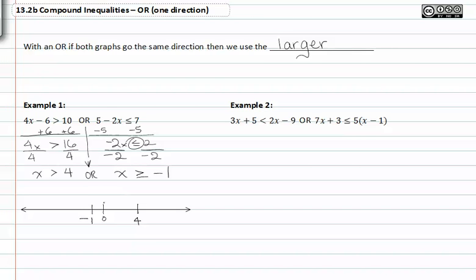If x is greater than or equal to -1, this is going to be a closed dot at -1, heading in the positive direction because x ≥ -1.